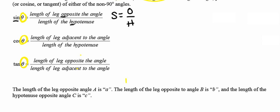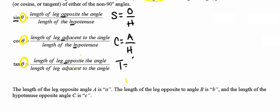Cosine of an angle is defined to be the length of the leg that's adjacent to that angle over the hypotenuse. So cosine of an angle is the adjacent side over the hypotenuse. The tangent of an angle is defined to be the length of the leg opposite the angle over the length of the leg adjacent to the angle. So tangent is equal to opposite over adjacent.